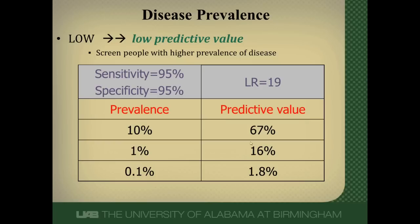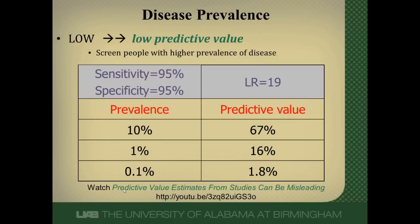This table shows a test with both sensitivity and specificity at 95% — a very good positive likelihood ratio, anything over 10 is really good. With prevalence varied from 0.1% up to 10%, you can see what a positive test means at each prevalence level. At a prevalence of one in a thousand, even with a positive test, there's less than a 2% chance the person actually has disease. Your positive predictive value varies substantially based on disease prevalence. I have a video called 'Predictive Value Estimates from Studies Can Be Misleading' on YouTube that goes through this in more depth.